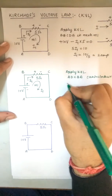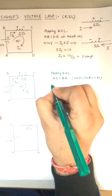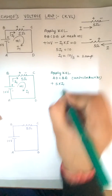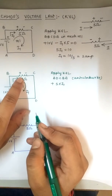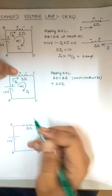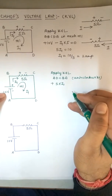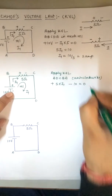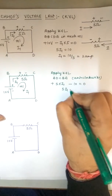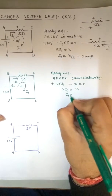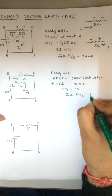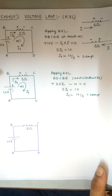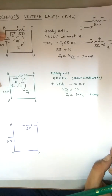Starting from a going anticlockwise: the first element encountered is the resistor. The last terminal reached is plus, so plus 5·I1. The next element is the battery and its last terminal is minus, so minus 10 equals zero. Therefore 5·I1 = 10, and I1 = 10/5 = 2 amperes.